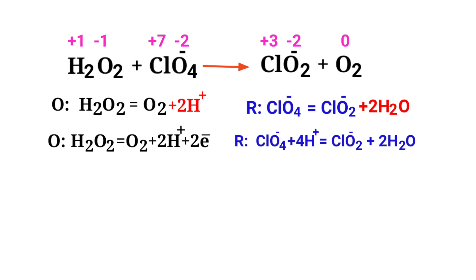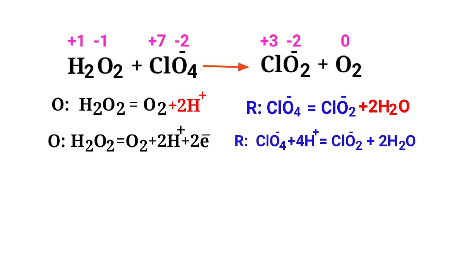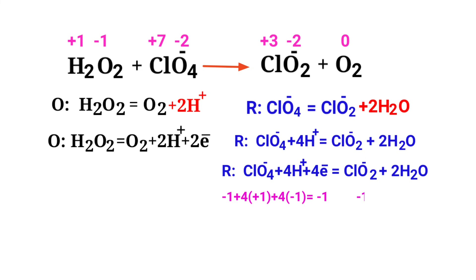Now balance the charges in the reduction half reaction. Both sides are not equal, so add four electrons to the left side to make it equal to minus 1. The addition of charges is now equalized in the reduction half reaction.